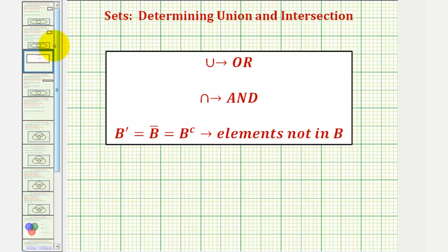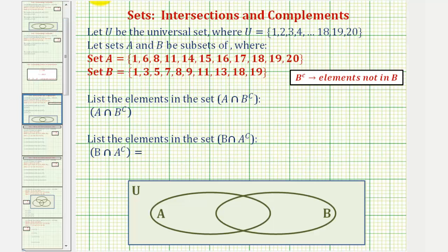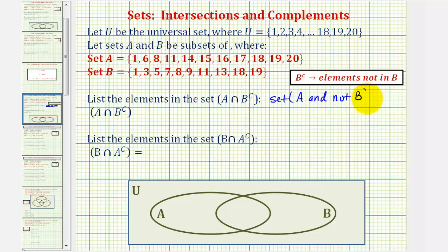Going back to our example, if we're trying to find the elements in set A intersect B complement, we can think of this as the set of elements in set A and not in set B. And for the elements in set B intersect A complement, we can think of this as the set of elements in B and not in A.